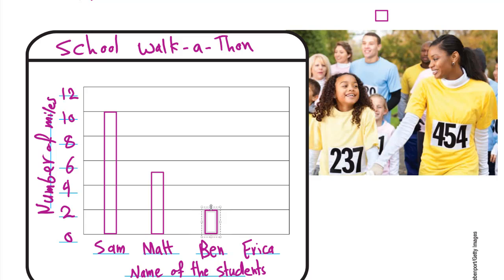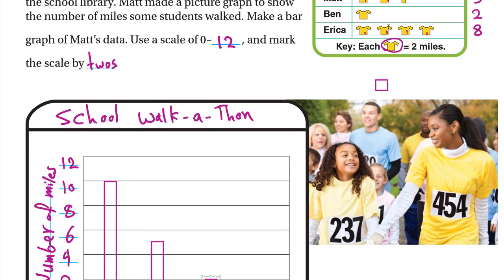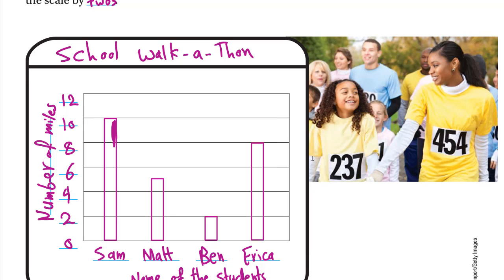Ben's bar is 2, so it goes just up to 2. Erica's bar is 8, so we count 2, 4, 6 — the bar goes right up to 8. Now let's shade all of the bars.